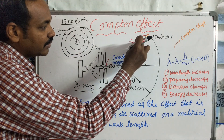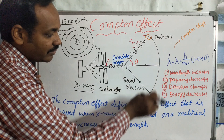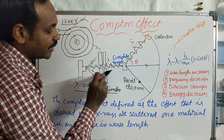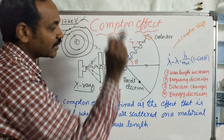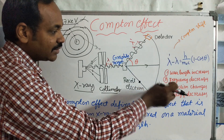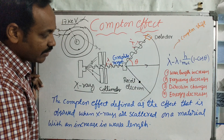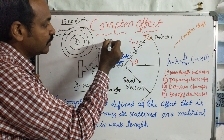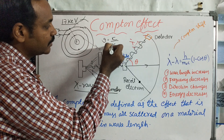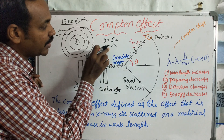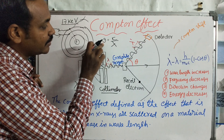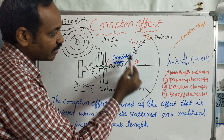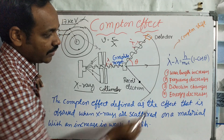So we observe that the wavelength increases — denoted as lambda dash. The wavelength increases, which confirms the Compton observation. The wavelength increase means frequency decreases, because the relation is: frequency (nu) equals velocity divided by lambda, or c divided by lambda. So wavelength and frequency are inversely proportional — when wavelength increases, frequency decreases.